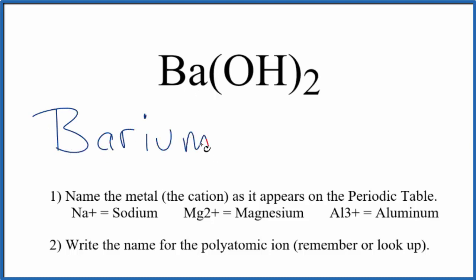Next, we're going to write the name of the polyatomic ion. That's this OH, the hydroxide ion. So we just write hydroxide. So the name for Ba(OH)₂ is just barium hydroxide.